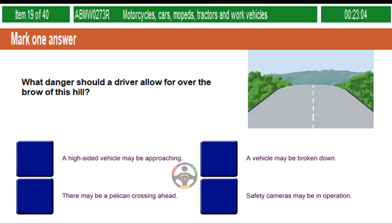What danger should a driver allow for over the brow of this hill? A high-sided vehicle may be approaching. A vehicle may be broken down. There may be a pelican crossing ahead. Safety cameras may be in operation.